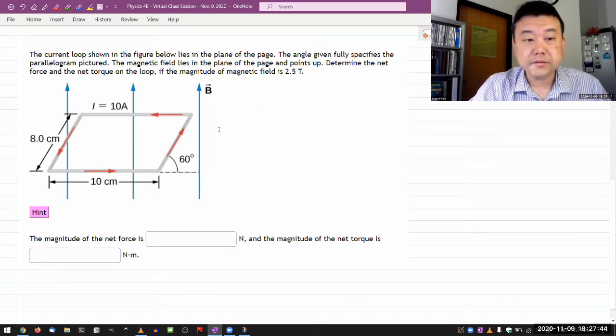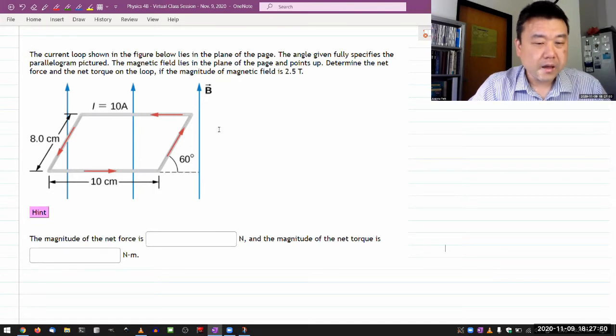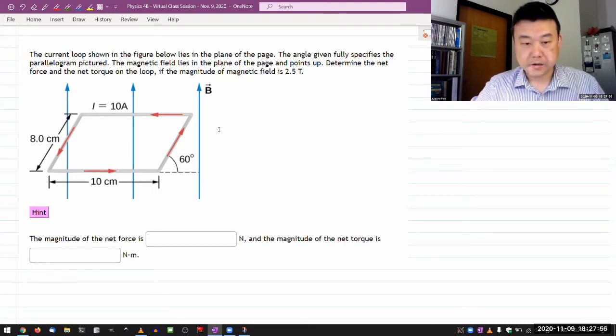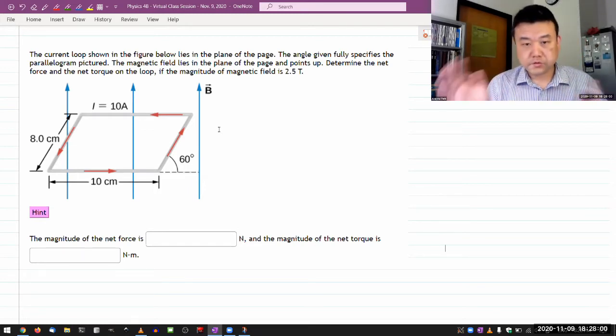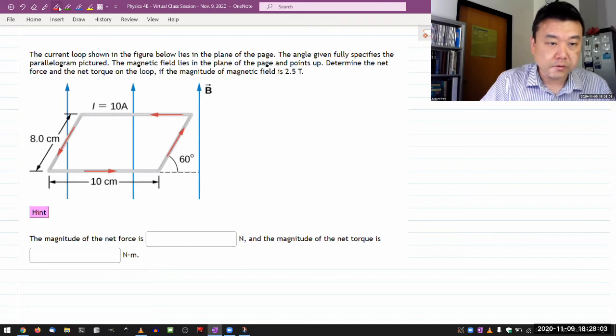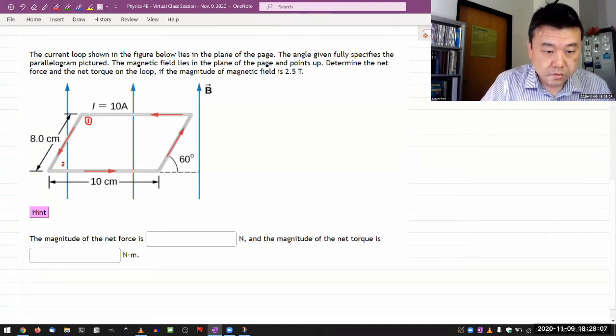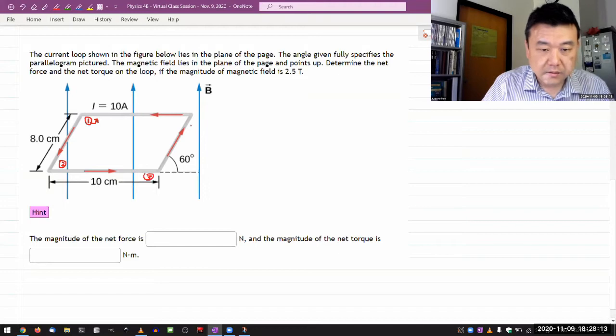Determine the net force and the net torque on the loop. I'm tempted to say net force will be zero, because this is what I'm looking at. So I'm just going to quickly do the right hand rule, starting with, let me label all the segments of the wire. One, two, so one goes here, two goes there, three, and four.